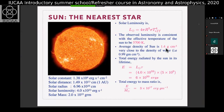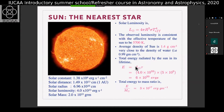Now we can make a logical argument to see what kind of sources can generate this much energy. Taking the lifetime of the Sun as 5 × 10^9 years and the solar luminosity, we can calculate what is the total amount of energy the Sun would have emitted till now. That will be luminosity multiplied by time, which turns out to be something like 6 × 10^50 ergs.